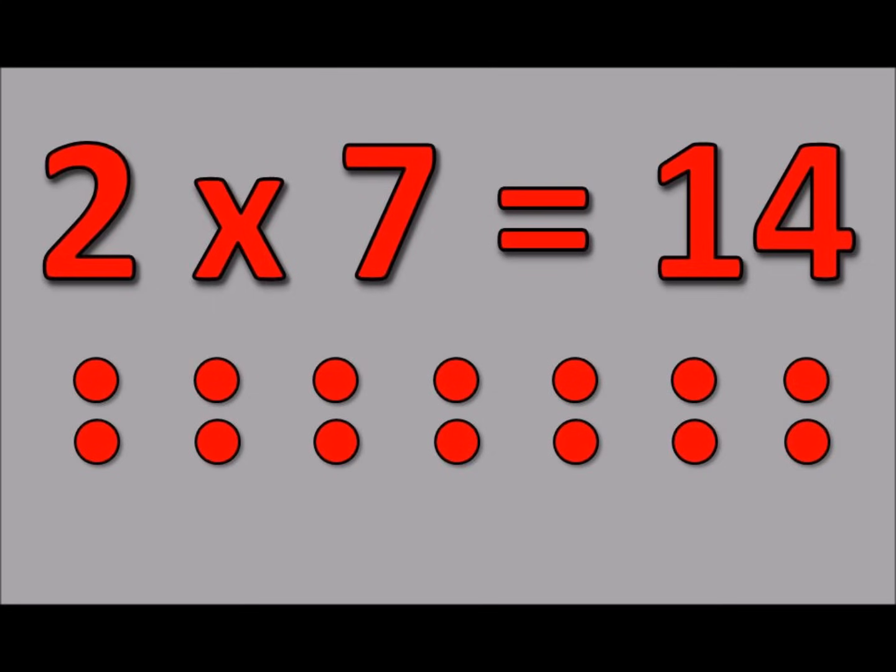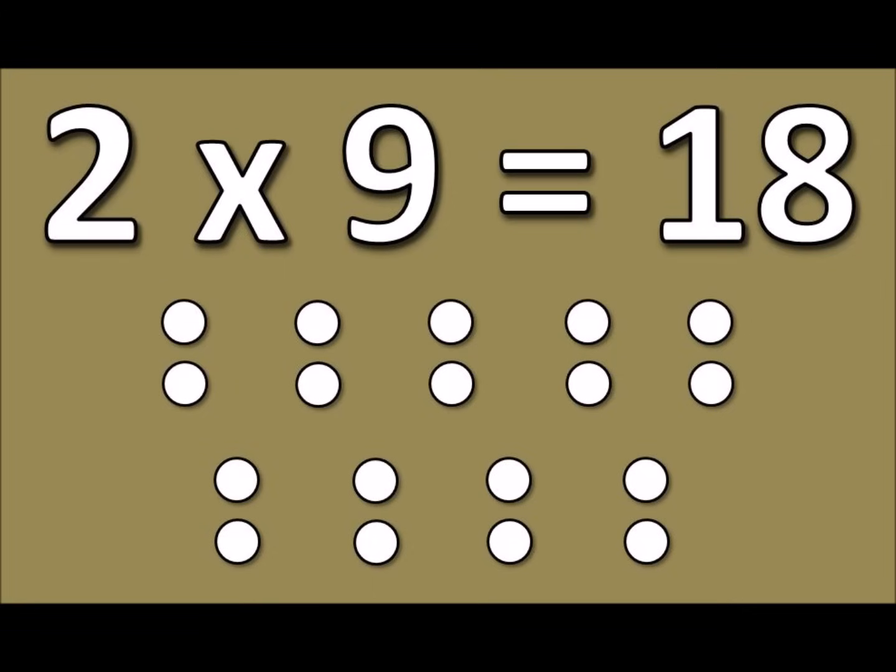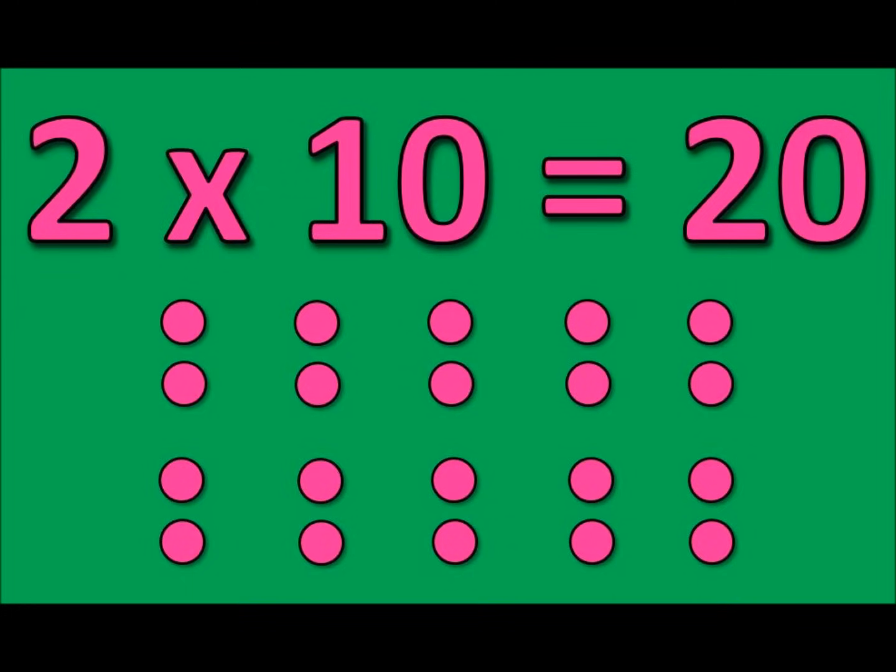2 times 7 is 14. 2 times 8 is 16. 2 times 9 is 18. 2 times 10 is 20.